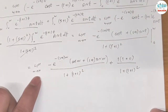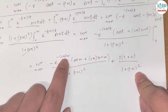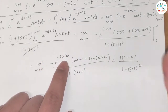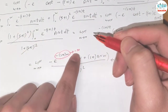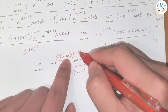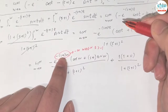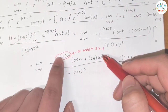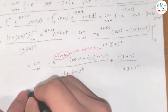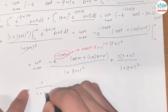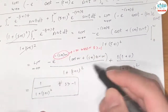For convergence, the exponent must go to negative infinity as w → ∞, so that e^(-(s+1)w) → 0. This requires s + 1 > 0, i.e., s > -1. When s > -1, the w-term vanishes and the final answer is: L{e^(-t)·sin(t)} = 1 / [(s+1)² + 1], for s > -1.